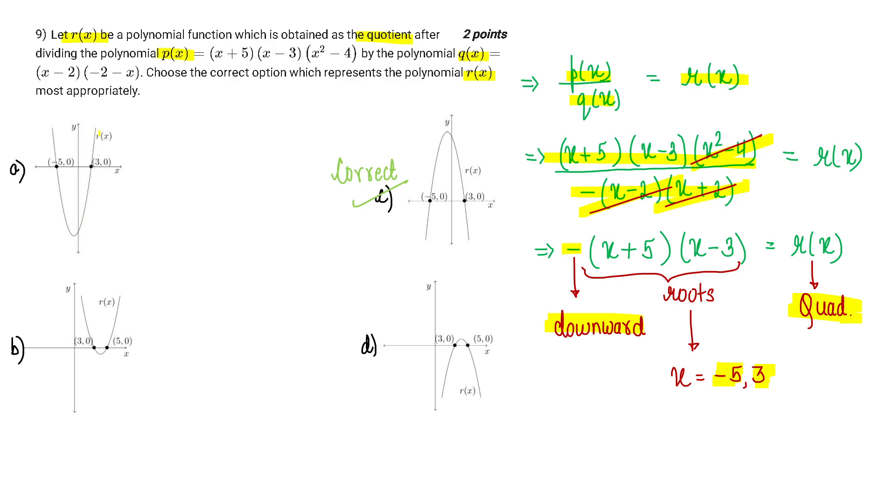This is an upward parabola, so this gets rejected. Upward parabola, reject. Downward parabola, very nice. But the roots were minus 5 and 3. And here, roots are 3 and 5, so this gets rejected. Let's see the last option. Roots are minus 5 and 3. And this is a downward parabola. Therefore, the correct option will be C1.